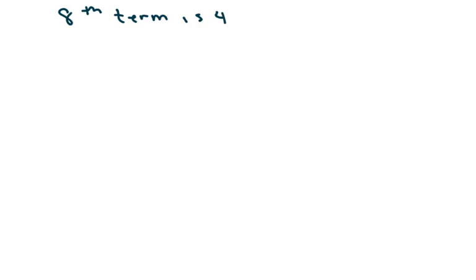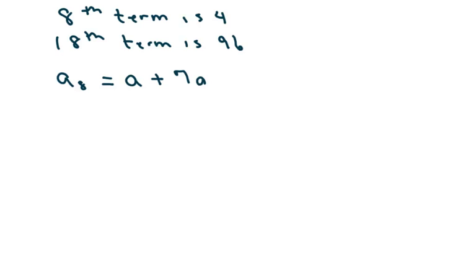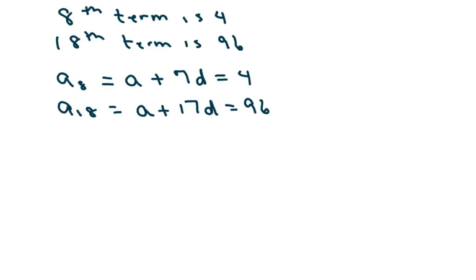I'm going to go a little faster on the next ones. We have the eighth term is 4, and my 18th term is 96. So your eighth term equals your first term plus 8 minus 1, which is 7d, and that equals 4. My 18th term is your first term plus 17d, which equals 96.